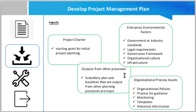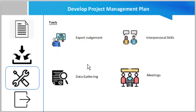The second input is outputs from other processes — the subsidiary plans and baselines that are outputs from other planning processes become inputs here. Also, enterprise environmental factors, which include government and industry standards, legal requirements, government frameworks, organizational culture, and infrastructure. Finally, organizational process assets, which include organizational policies, processes for guidance, monitoring and controlling, templates, and historical information.